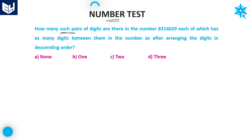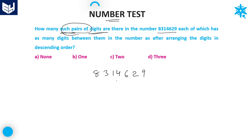First, see the first question. It is asking: how many such pairs of digits are there in the number 8 3 1 4 6 2 9? Each of which has as many digits between them in the number as after arranging the digits in descending order.